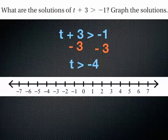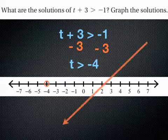t > -4. I'm going to have an open circle at -4, and I'm going to need to shade in all the numbers that are greater than -4.